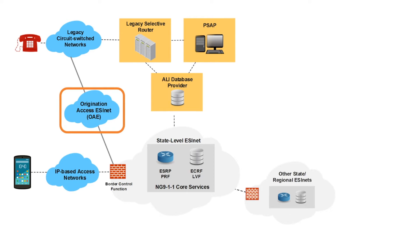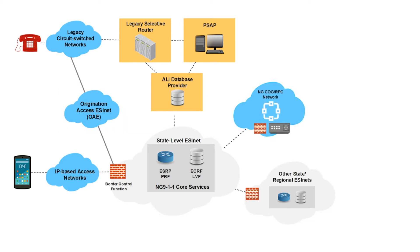For PSAP host sites that are upgraded to receive NG911 calls delivered by the state-level ESINet, two new pieces of equipment are needed: an IP router and a BCF. The IP router will allow the PSAP host site to interconnect to the state-level ESINet, while the BCF will provide an additional layer of perimeter protection.